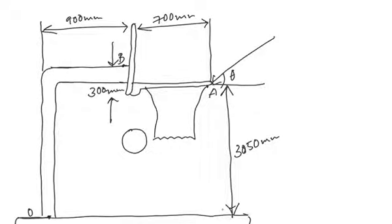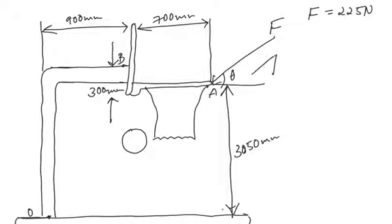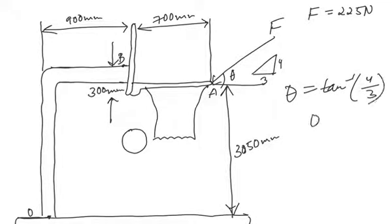In this question we have a basketball slam dunk in which a force F is acting at angle theta to the rim. The magnitude of force F is given to be 225 newtons. To find theta, we use the given diagram of a 4-3 right triangle, so theta equals tan inverse of 4 by 3, giving theta equal to about 53.13 degrees.